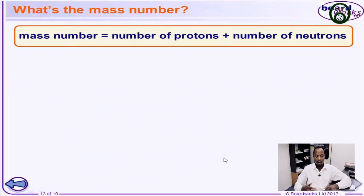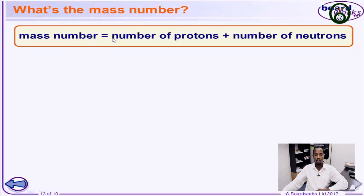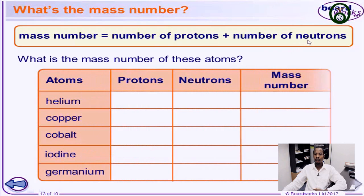We represent this as a formula: the mass number of an atom is equal to the number of protons plus the number of neutrons.